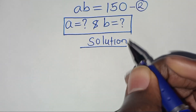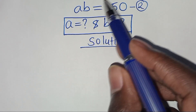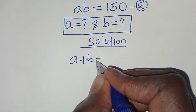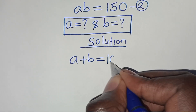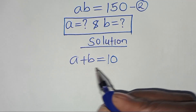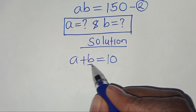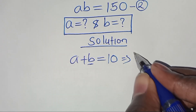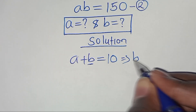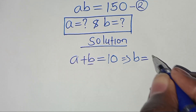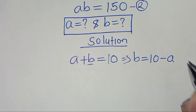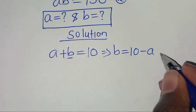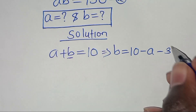From equation 1, which is a plus b equals 10, let's make b the subject of the formula. In this case we'll have b equal to 10 minus a. Let's call this equation 3.